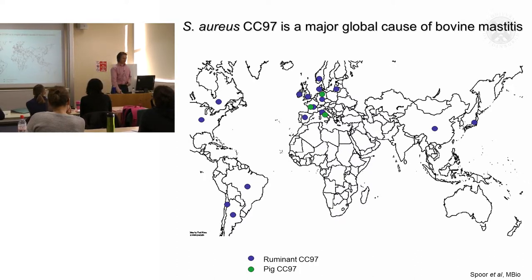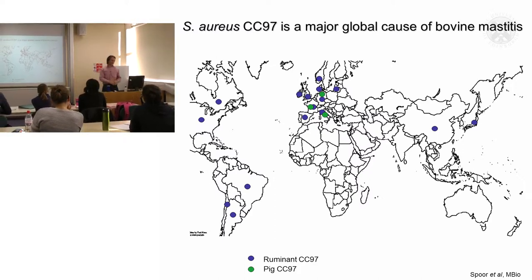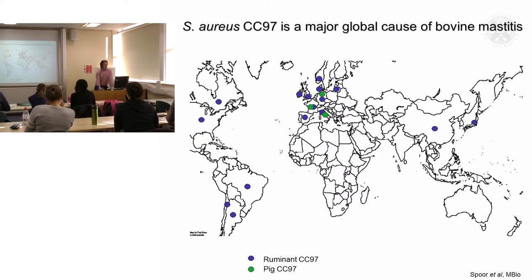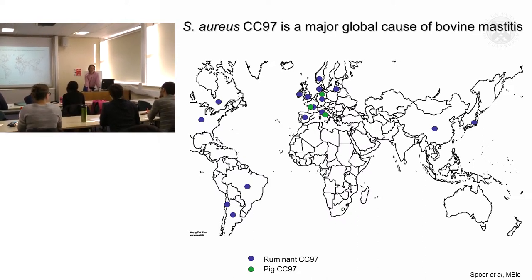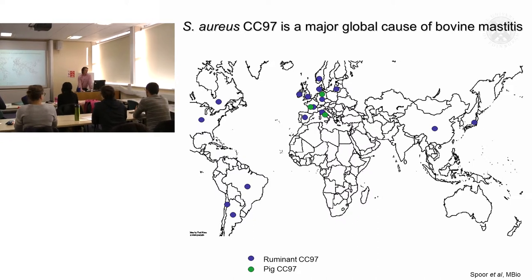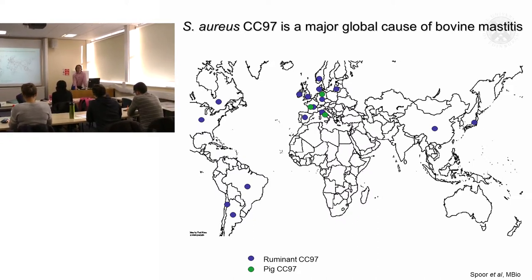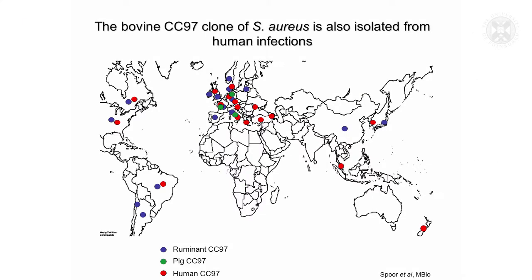There are lots of unreported areas just because there hasn't been very good sampling of strains within those regions. CC97 is dominant as a cause of bovine mastitis, but it can also cause small ruminant mastitis and can occasionally cause pig infections as well — those are the ones indicated in green.